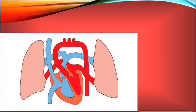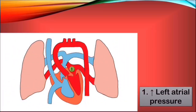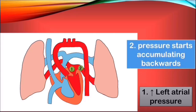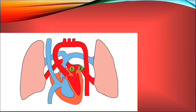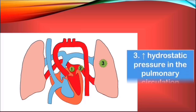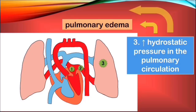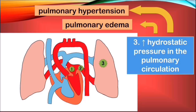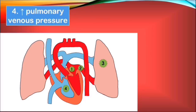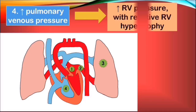First, because all that blood in the left atrium can't be mobilized into the systemic circulation, it will start to accumulate backwards and lead to increased pressure in the pulmonary veins. This pressure will eventually reach the small vessels and capillaries of the pulmonary circulation, leading to a significant increase in hydrostatic pressure. All that extra blood will start to leak out into the alveoli, causing pulmonary edema. Also, it will lead to the development of pulmonary hypertension, making it harder for the right heart to pump blood efficiently. These increased vascular pressures will force the right ventricle to develop higher pumping forces and eventually reactive hypertrophy.